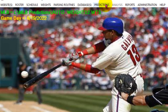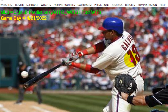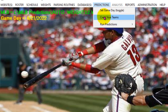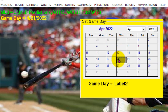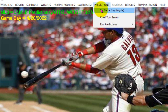Depending upon what date you wanted, you would come up here and select the 21st, or in this case, the 20th. This will always default to today's date. The game day here on the left will be updated correctly for the 20th. So that's how you set up the game day.